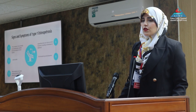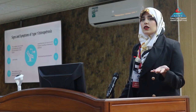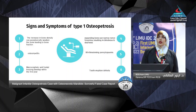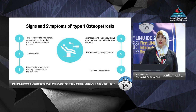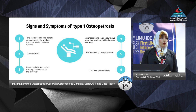Osteomyelitis especially affects the jaw area. Macrocephaly and frontal bossing are features. The bone marrow attempts compensatory expansion, leading to extramedullary hematopoiesis. Nerve compression causes blindness and deafness. Other features include life-threatening anemia, infection, bleeding tendency, and tooth eruption defects — the bone becomes so dense that teeth cannot erupt.